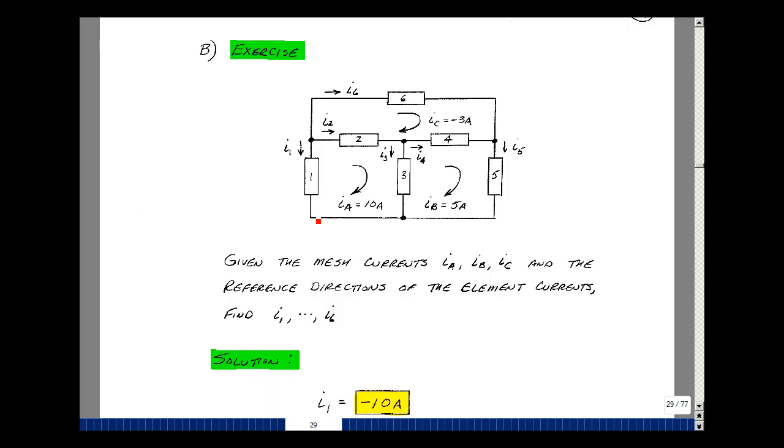Here's the current I1 in element one, and it actually is in the opposite direction of I sub a. So I1 is equal to minus 10. Current I2 is here, and it's going to be I sub a minus I sub c. So it's going to be 10 minus a minus 3 or 13. The current in here is going to be I sub a minus I sub b. So it's going to be 10 minus 5 or 5 amps.